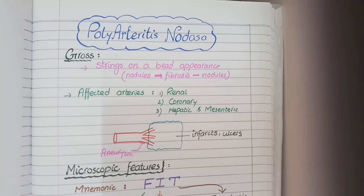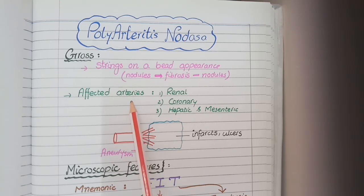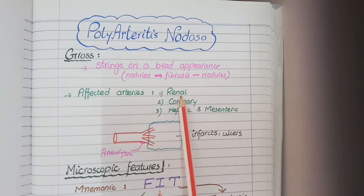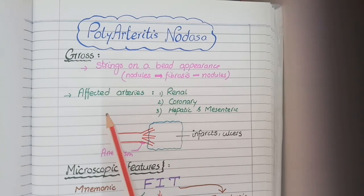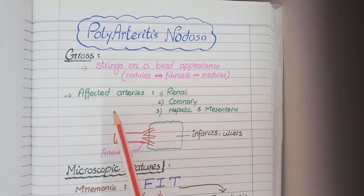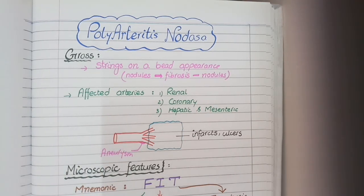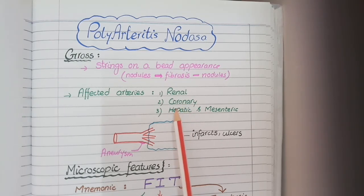The important thing is the order of involvement of vessels in polyarteritis nodosa. The most commonly involved artery is the renal artery. Narrowing of the renal artery causes renal artery stenosis, which results in secondary hypertension. So rapidly accelerating hypertension is the main clinical feature of polyarteritis nodosa. The second commonly involved artery is the coronary artery; narrowing of the coronary artery causes ischemia to the heart, or ischemic heart disease.